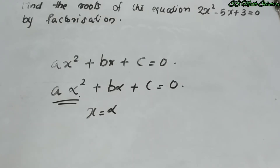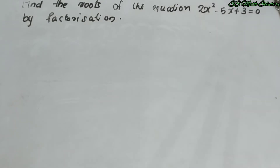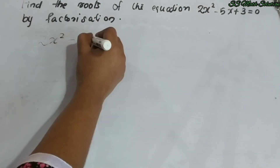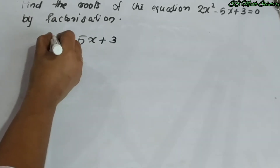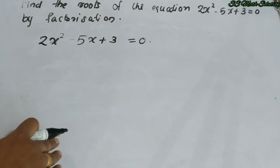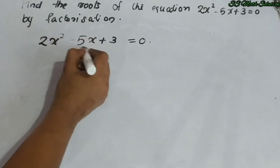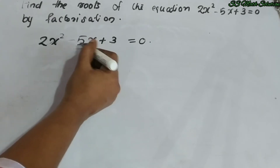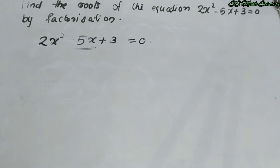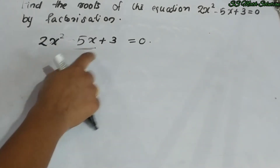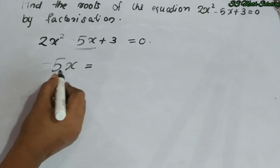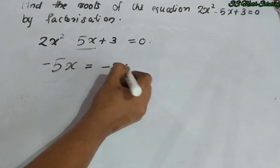Now we know what roots of the equation means. We are going to find the roots of this equation by the factorization method. Our equation is 2x² − 5x + 3 = 0. When we use factorization, we first look at the middle term, which here is −5x. We will split this middle term −5x.